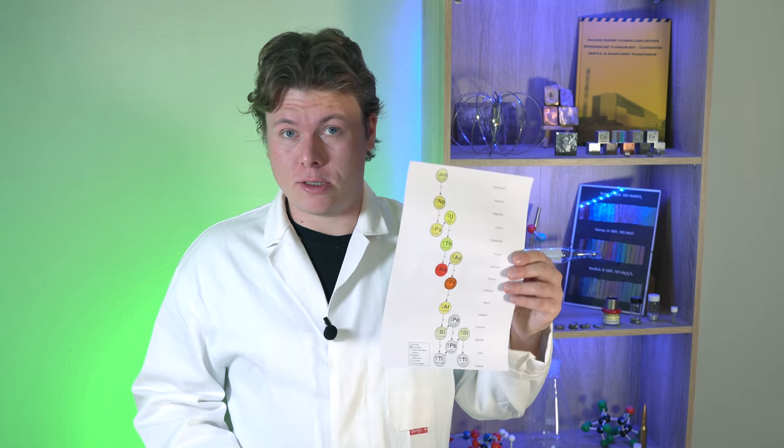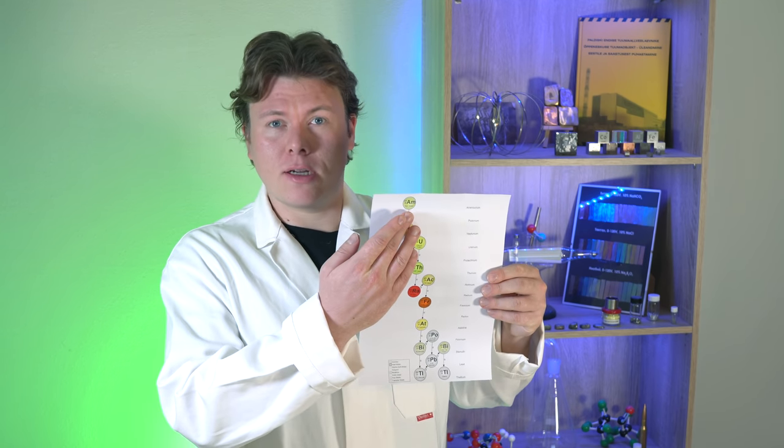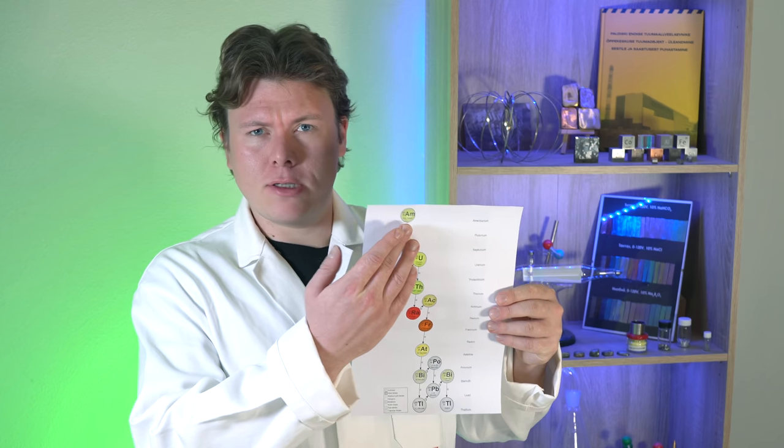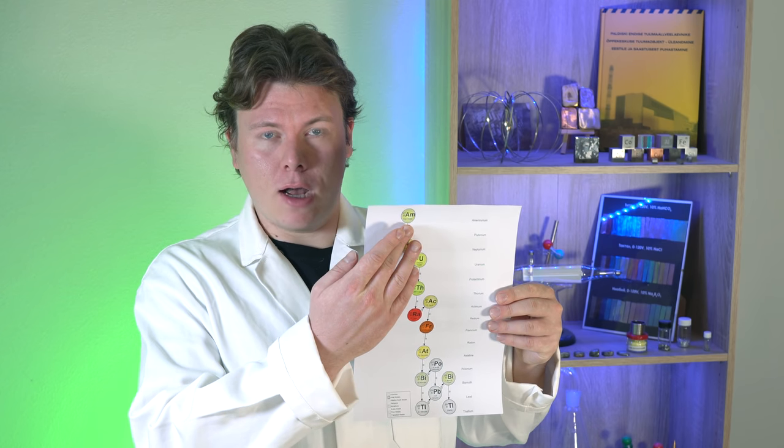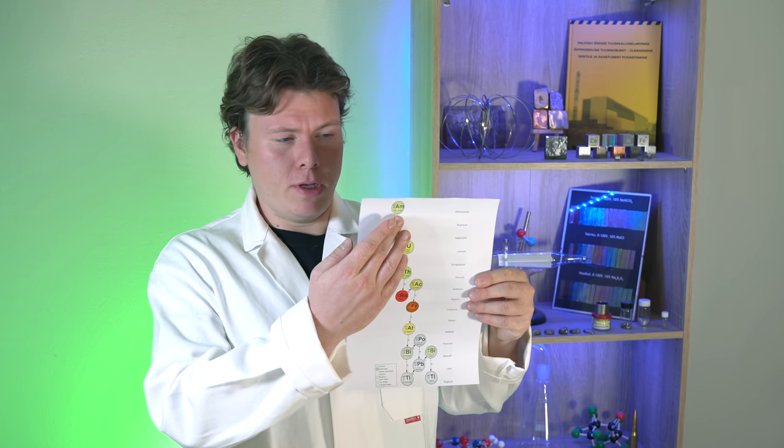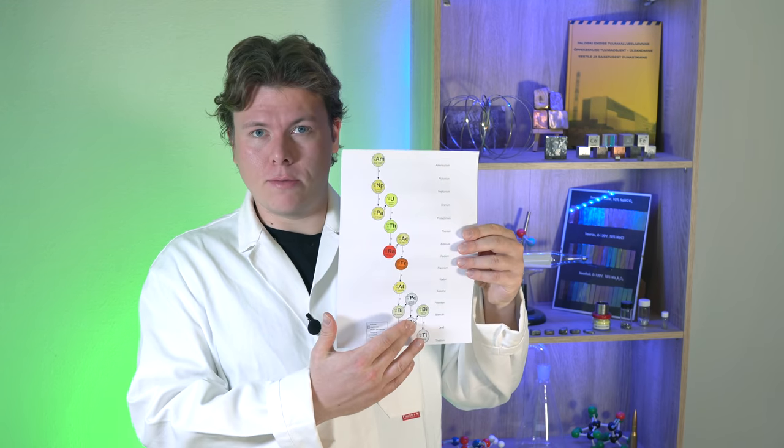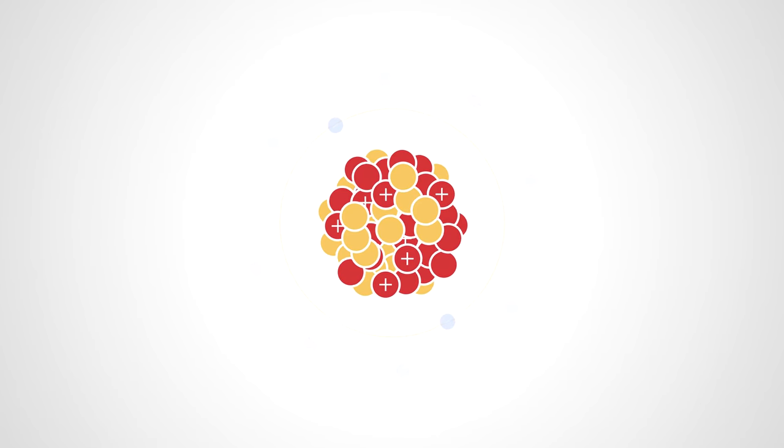Just like all metals from the actinide series, americium is a radioactive metal. To be more precise, it doesn't have stable isotopes. That is why as time passes it breaks down into more stable elements.